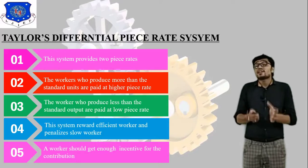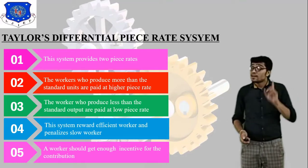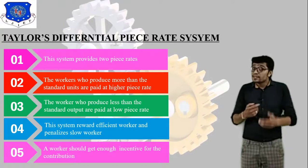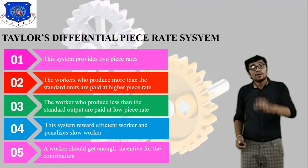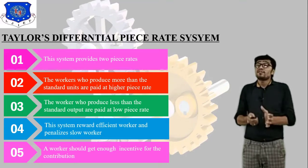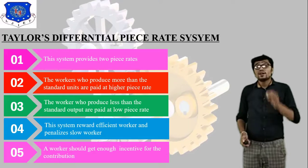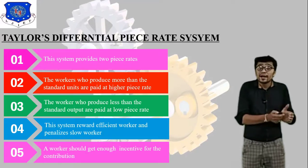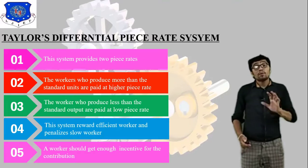These are the goals of Taylor's Differential Piece Rate System. In this system there are two different parts: first, a worker who produces more than the standard unit is paid at a higher piece rate, and on the other hand, the worker who produces less than the standard unit is paid at a lower piece rate.